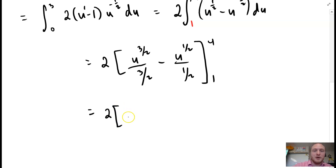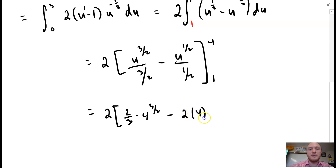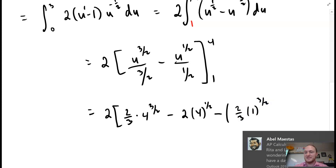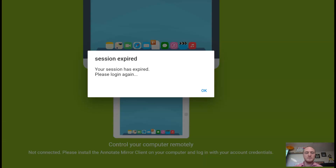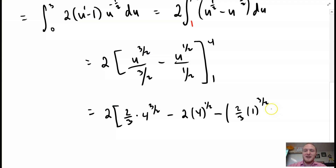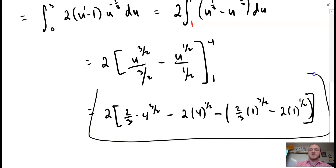So we have 2 times: two-thirds times 4 to the three-halves, minus 2 times 4 to the one-half, minus in parentheses two-thirds times 1 to the three-halves minus 2 times 1 to the one-half. Plugging in the values and evaluating gives the final answer. There's your answer — just leave it like that, you get the point, don't lose the point. Catch you next time, peace.